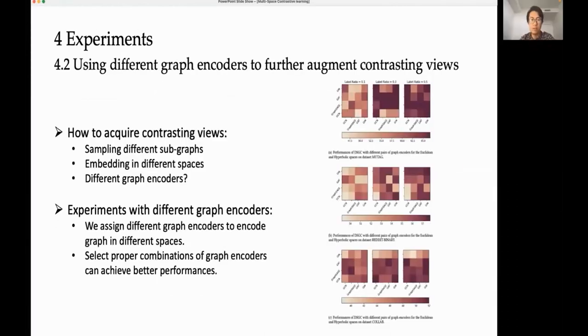We then study the proposed method, collaborating with different graph encoders for different embedding spaces to verify if it's possible to use different graph encoders to further augment contrasting views to improve performance. The experimental results are shown in the figures where the X-axis corresponds to the graph encoders for the hyperbolic space and the Y-axis corresponds to the graph encoders for the Euclidean space. The block with deeper color represents higher accuracies. According to the experiments, we found that the higher ratio of labeled training data, the better overall performance that DSGC has. But when ratio is low, it will be tricky to select different pairs of graph encoders for DSGC to achieve better performances.